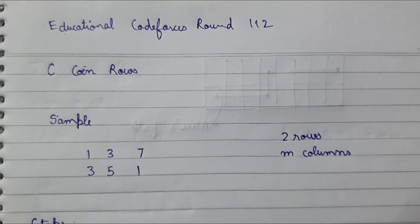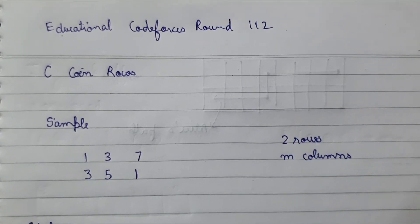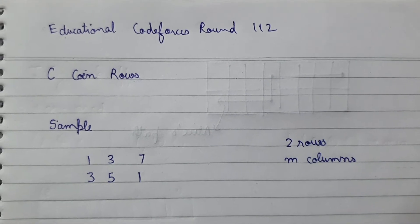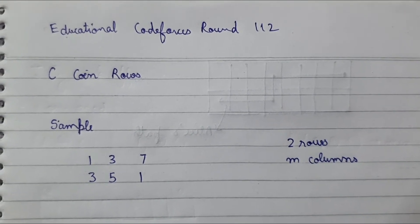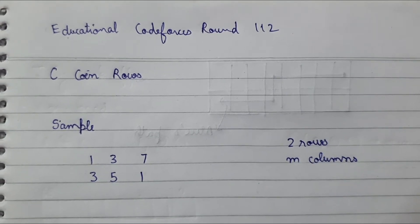Hello everyone, let's discuss this problem: Coin Rows from Codeforces Round 112. A sample input is given: 1 3 7 and 3 5 1. There are two rows and m columns.